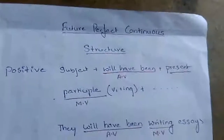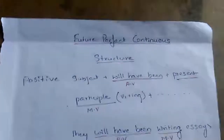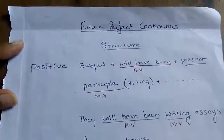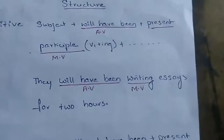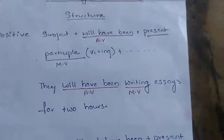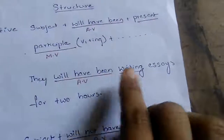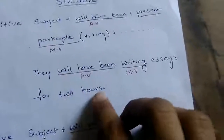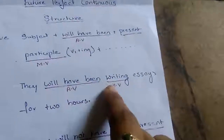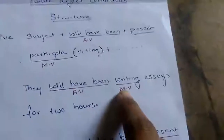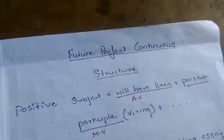The last type of future tense is future perfect continuous. The structure of the sentence would be like this: 'They will have been writing essays for 2 hours.' Here, 'will' indicates future, 'have' indicates perfect tense, 'been' indicates continuous, and the main verb is in present participle form.